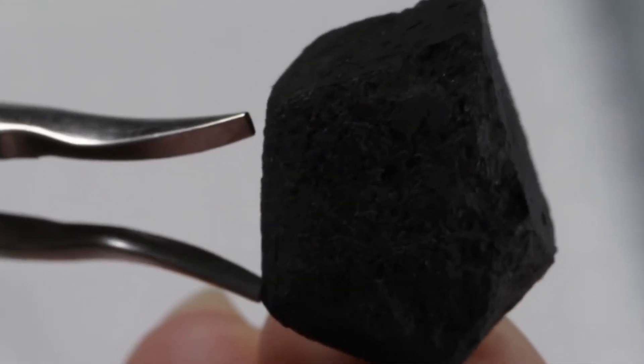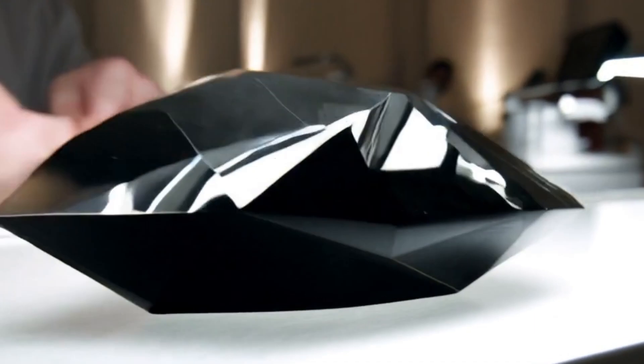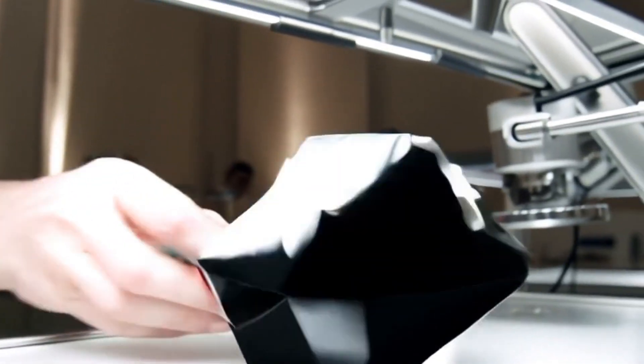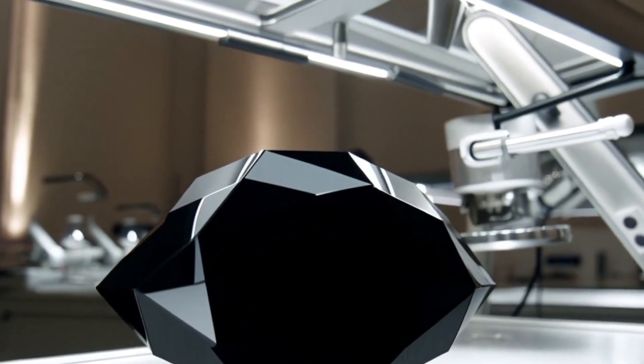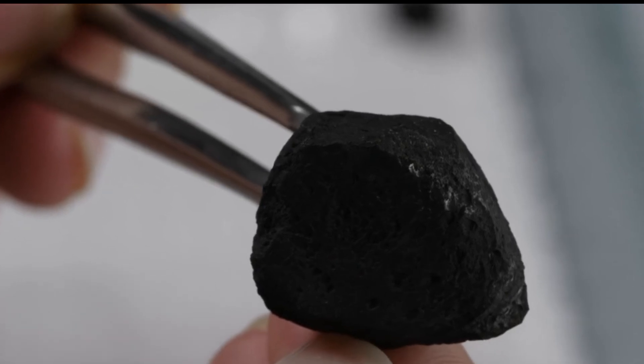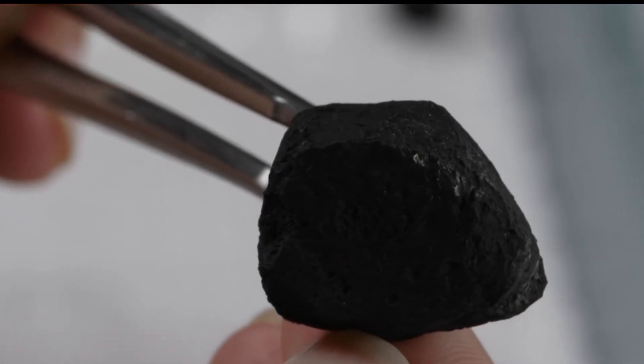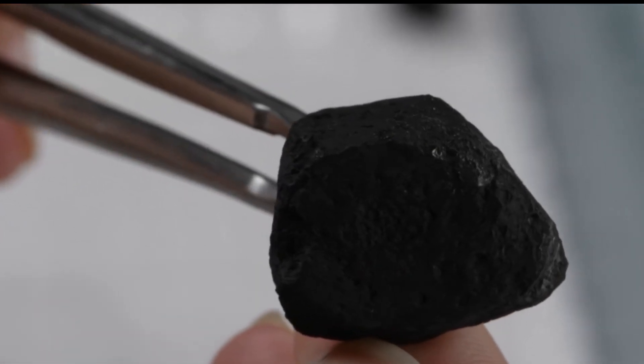Number 1: The water test. Purpose: check density. Real diamonds are heavy for their size. Fill a glass with normal water, drop the stone in. If it sinks quickly, that's a good sign. If it floats or sinks very slowly, it's likely fake.